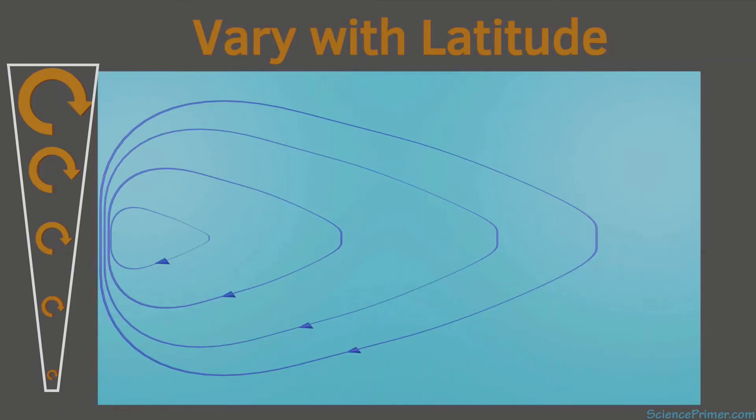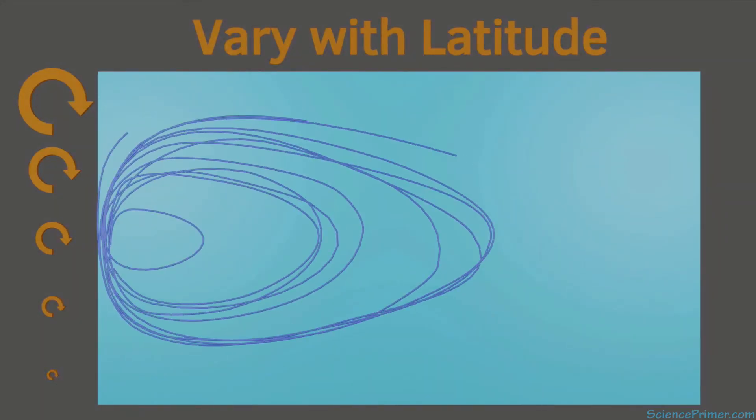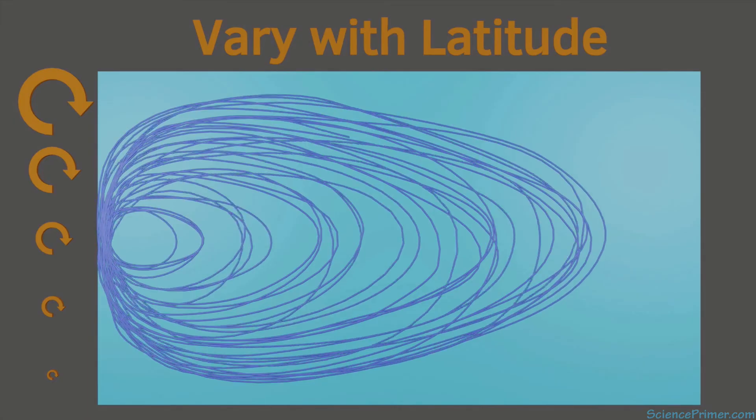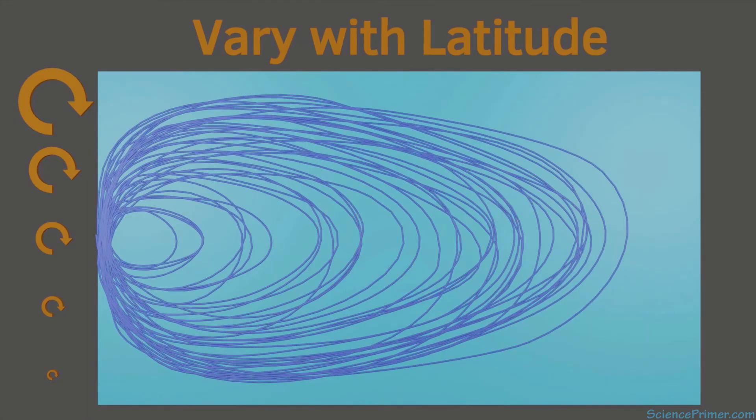To see how this shift to the west of the circulation pattern causes western boundary intensification, consider tracing a path of a bunch of particles as they circulate around the basin. Over time, a pattern emerges with all the water particles moving north, bunched up along the western boundary,